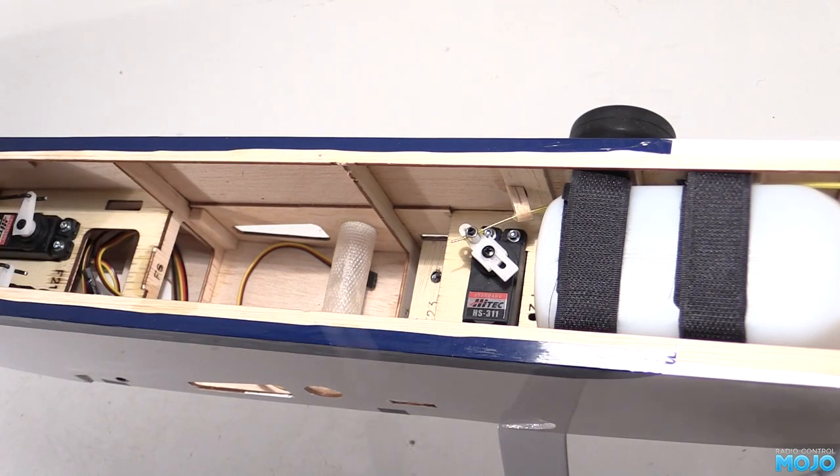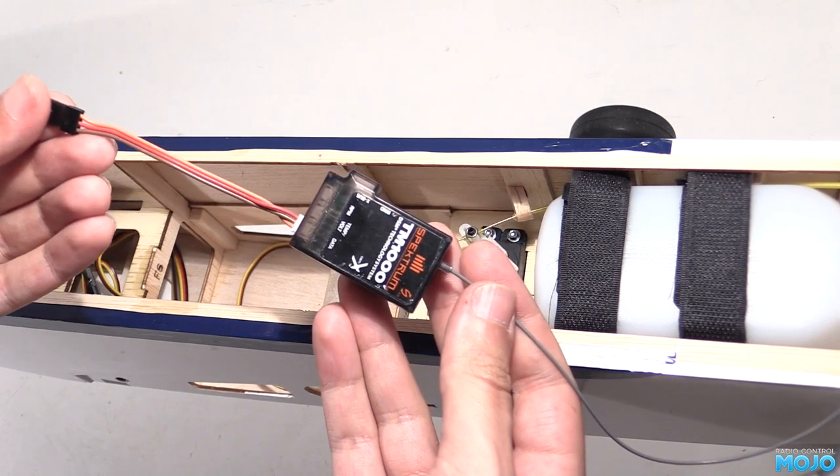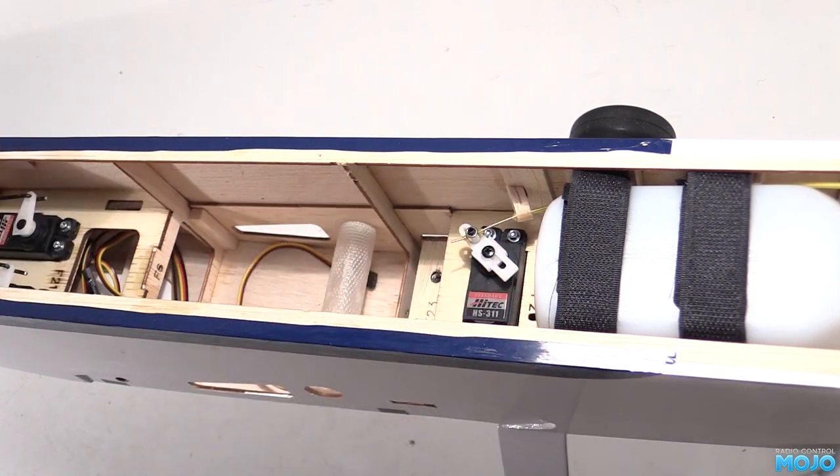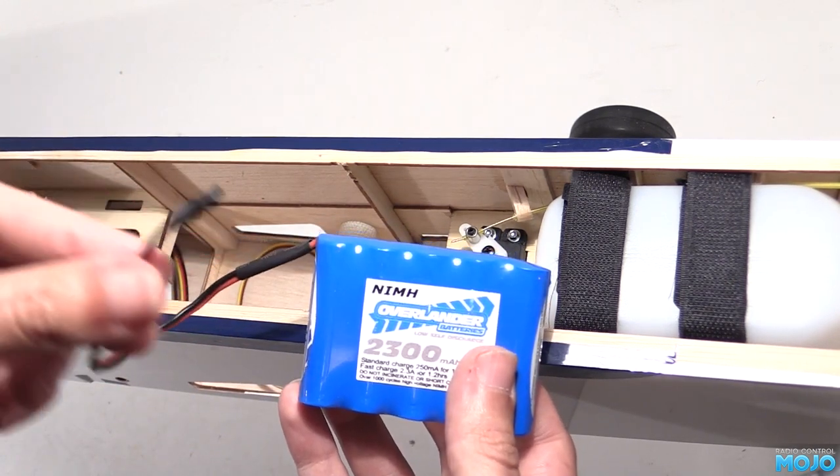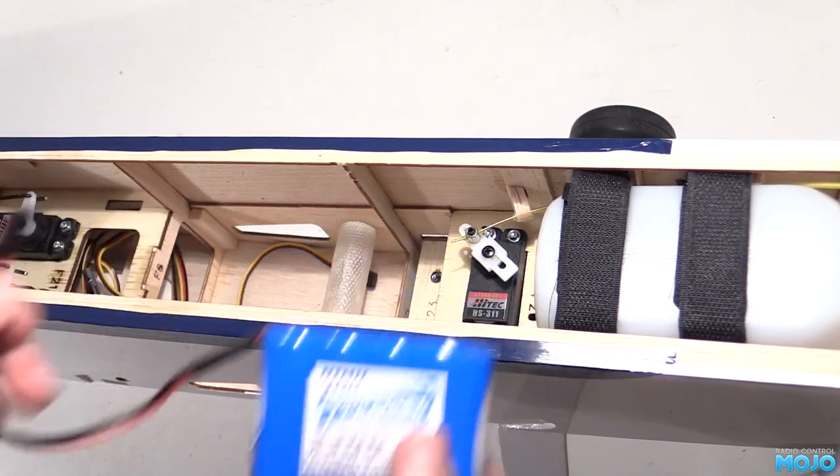I like to have signal information so there's a TM1000 telemetry module to go in. The main power switch. A five cell receiver pack. Lots of people are using two lithium cells now but I'm old fashioned.